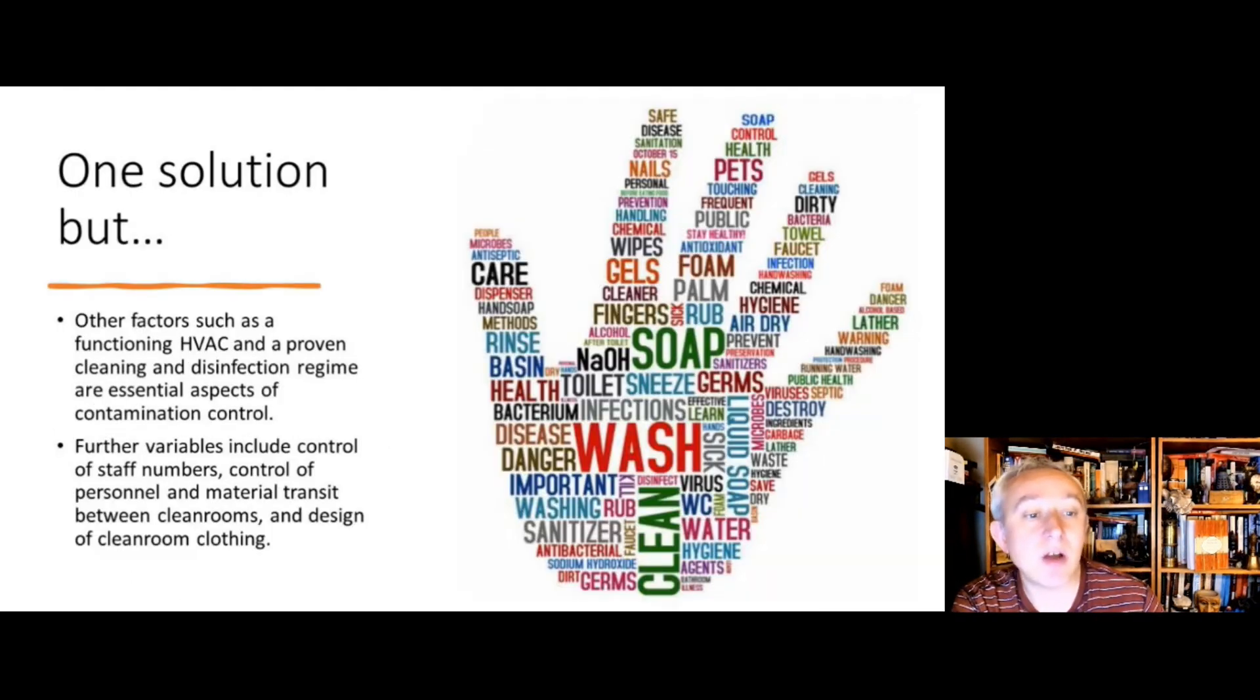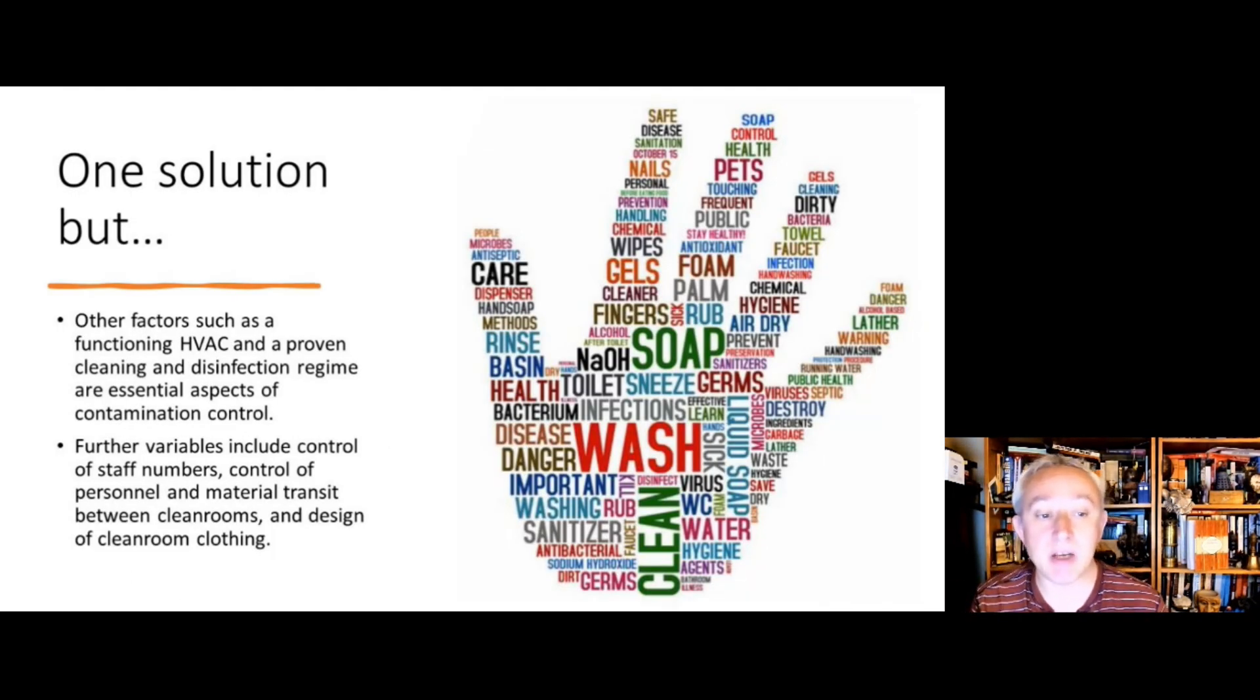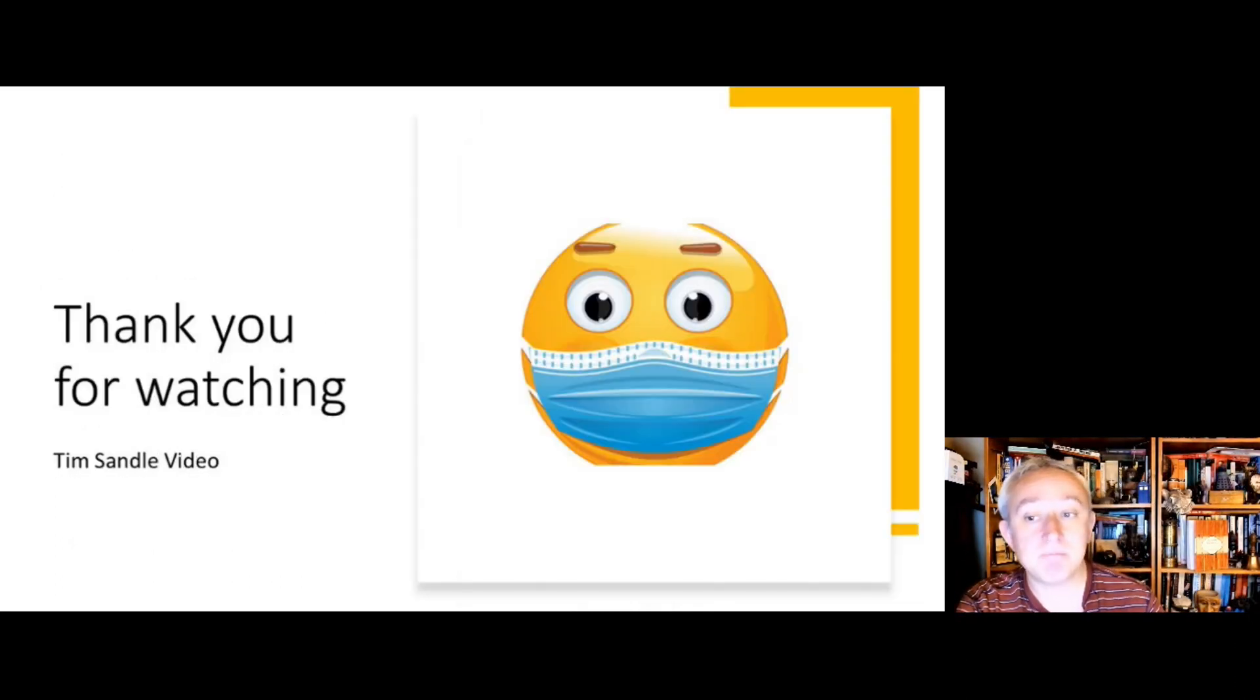But of course, there's no one solution to contamination control. Although polymeric flooring is of great importance, obviously we need to make sure we also have functioning HVAC systems, good cleaning and disinfection, control of numbers of people going into changing areas and occupancy levels for clean rooms, and also making sure we're wearing the right kind of clothing as well. There are always different factors that go into clean room control, and flooring control is just one of those factors.